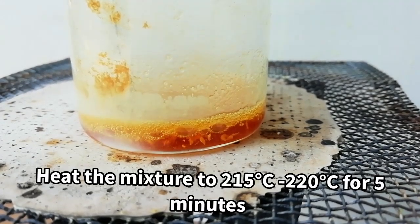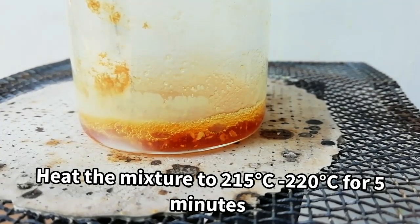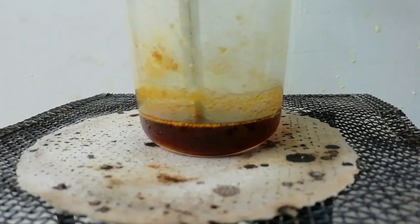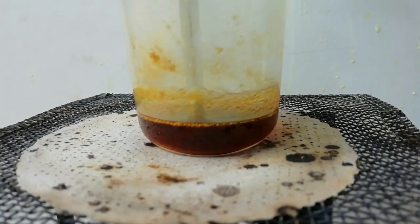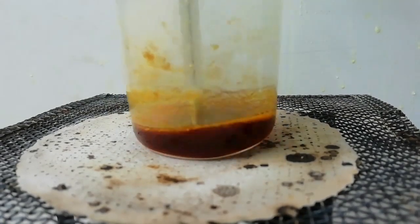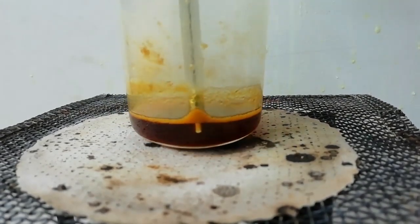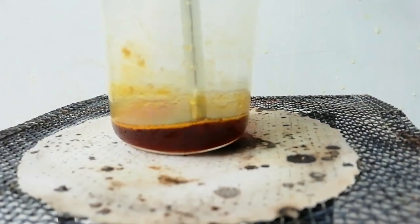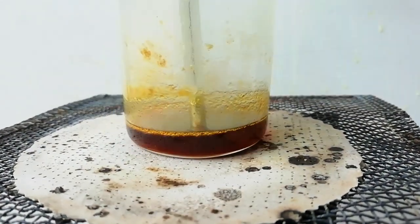The mixture is heated between 250 to 220 celsius for 5 minutes. When it reached 100 celsius water will evaporate off. Then the temperature reached 215. Solution turns to dark red color. It is okay.